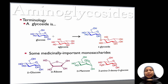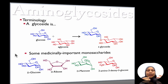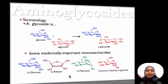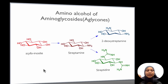Let's quickly go through the terminology. A glycoside is when you have a sugar that binds to an aglycone, forming a glycoside. There are many medicinally important monosaccharides — you have glucose, which is very important and widely used by cells. You also have D-ribose, mannose, and other sugars as well.